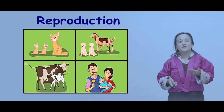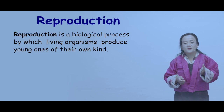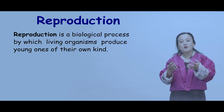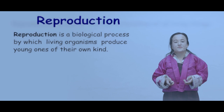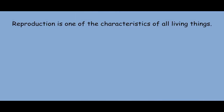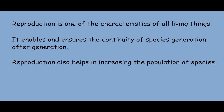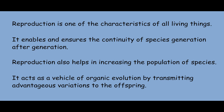Let us define what reproduction is. Reproduction is a biological process by which living organisms produce young ones of their own kind. It is one of the characteristics of all living things — it enables and ensures the continuity of species generation after generation, and also helps in increasing the population of species.